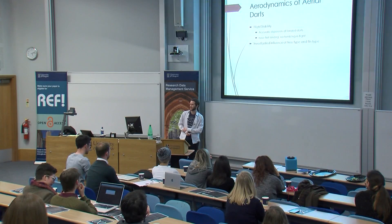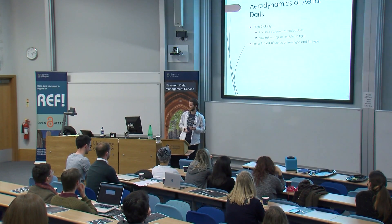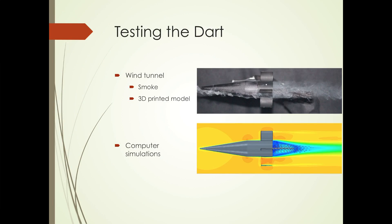With these in mind, I investigated both the influence of different tree types and different fin types and how these affect the stability and aerodynamics of the darts. In my project and in aerodynamics generally, there are two main methods of experimentation. First of all is by using what's called a wind tunnel, where you pass airflow over a model and usually insert a material such as smoke so you can follow where the flow goes and examine the different aerodynamic structures.